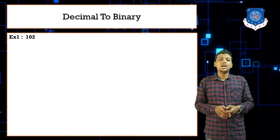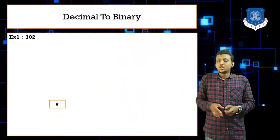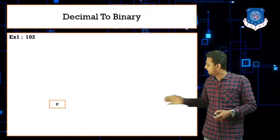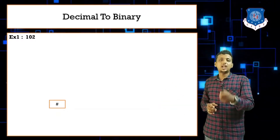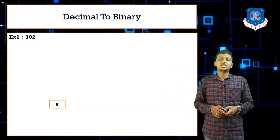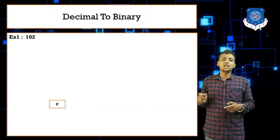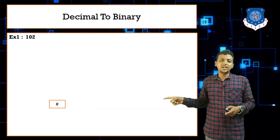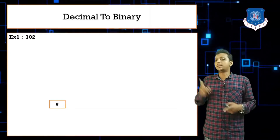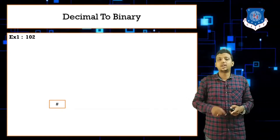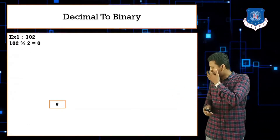Let's take another example — the number 102. Initialize the stack with hash, then start dividing, push the remainders into the stack, and repeat the step until you get one as the quotient.